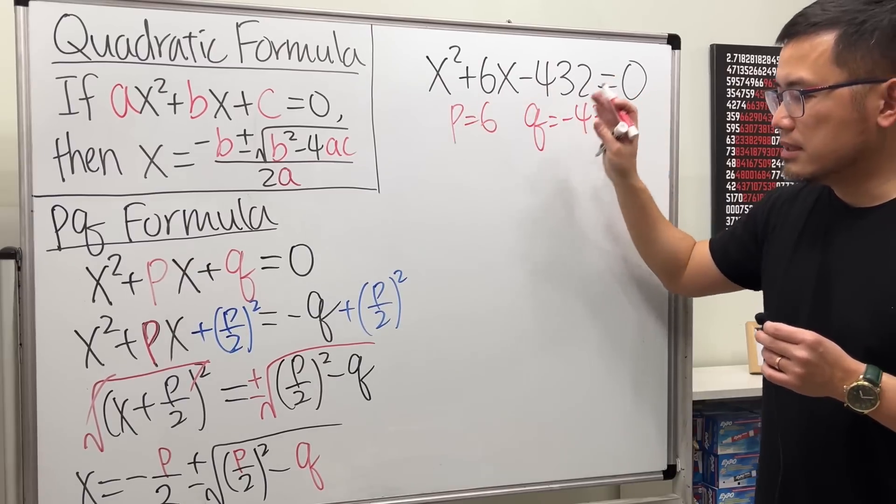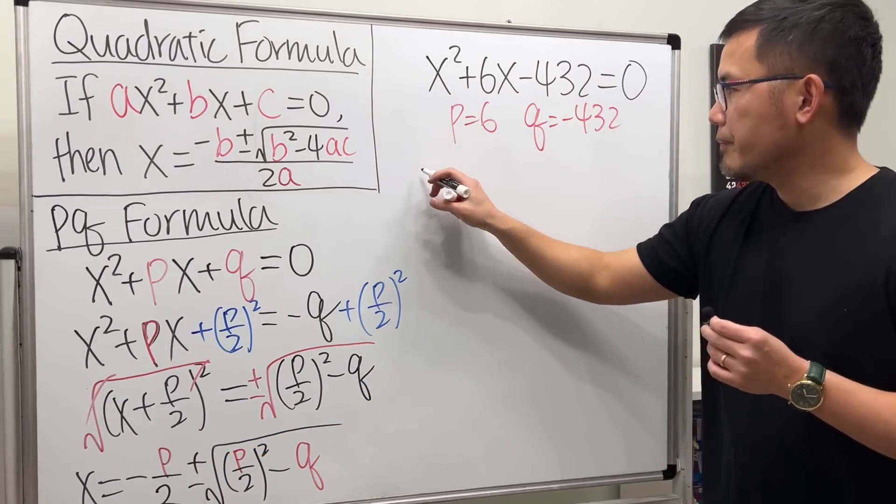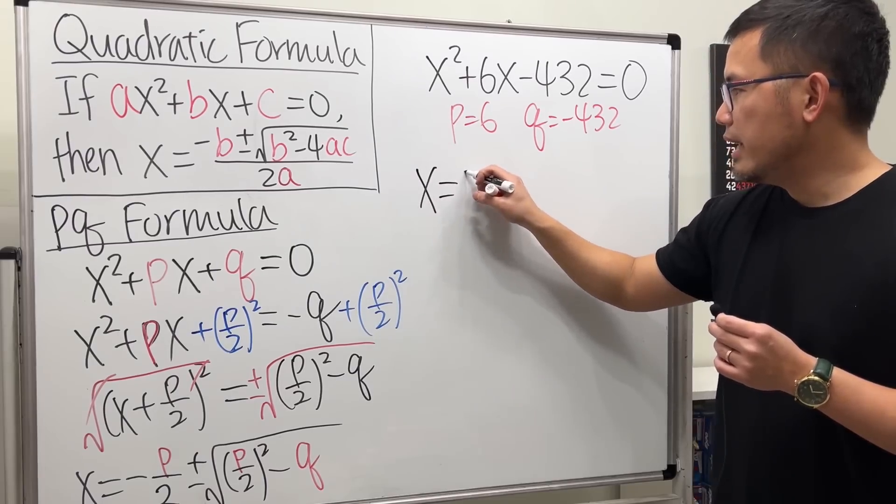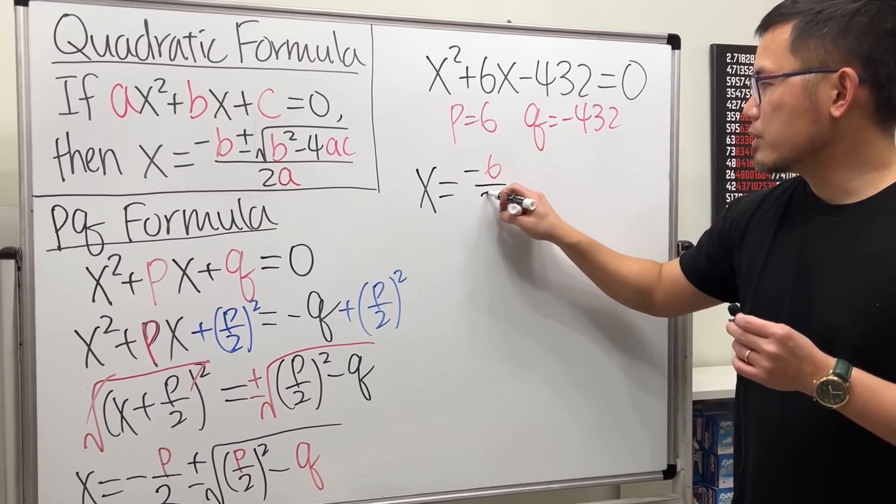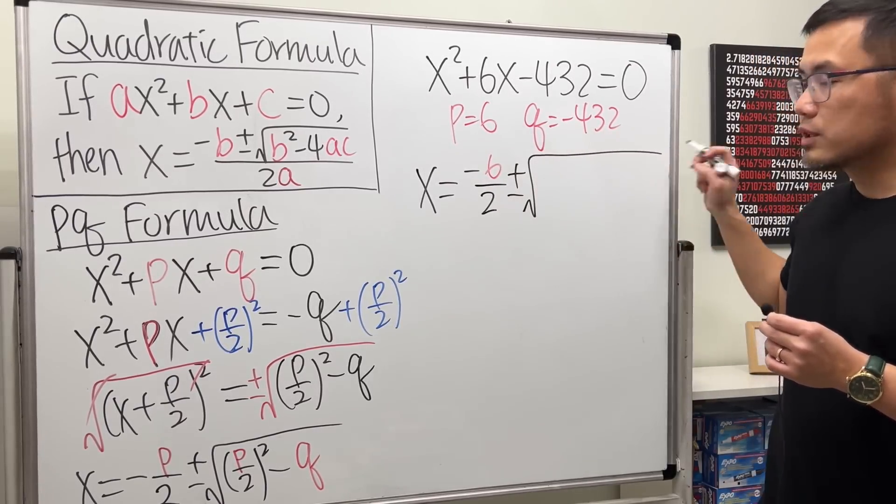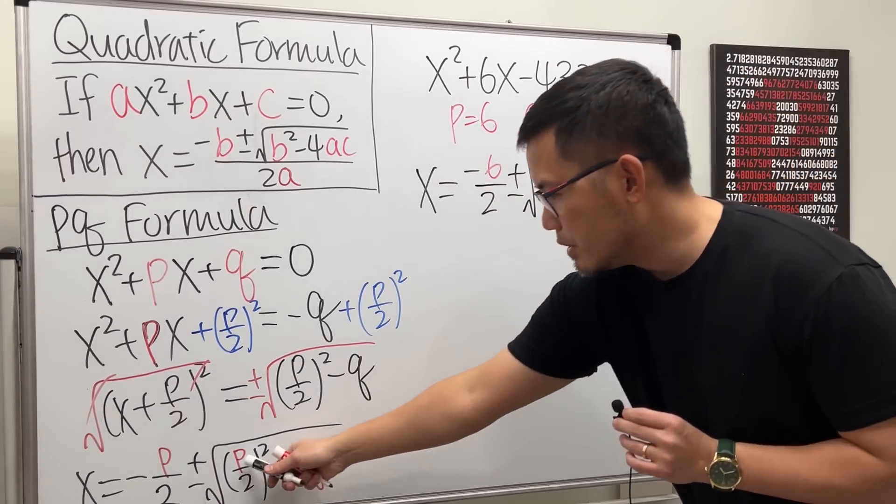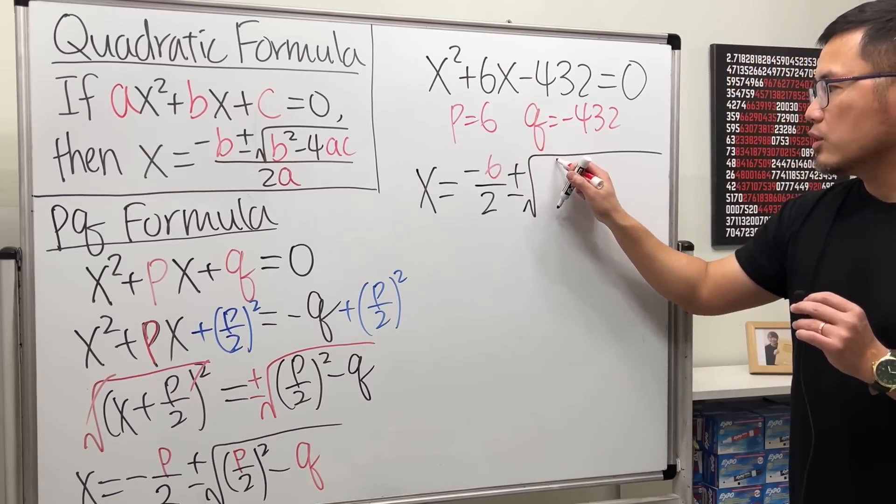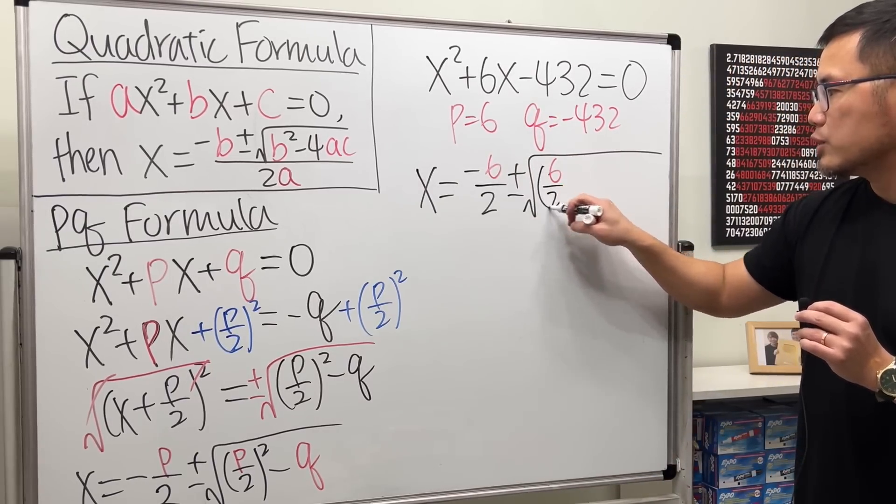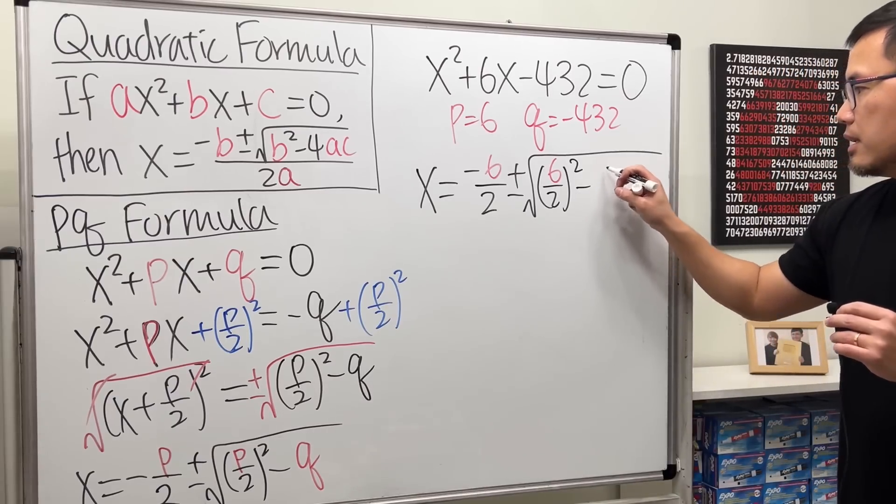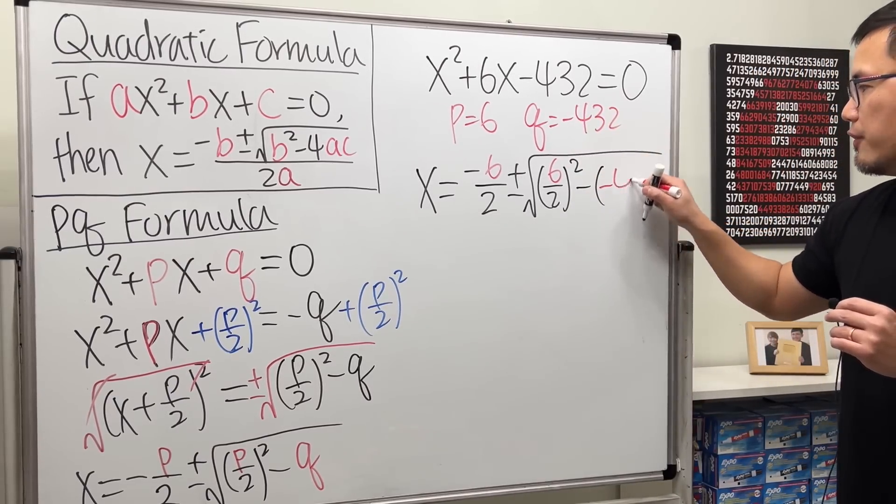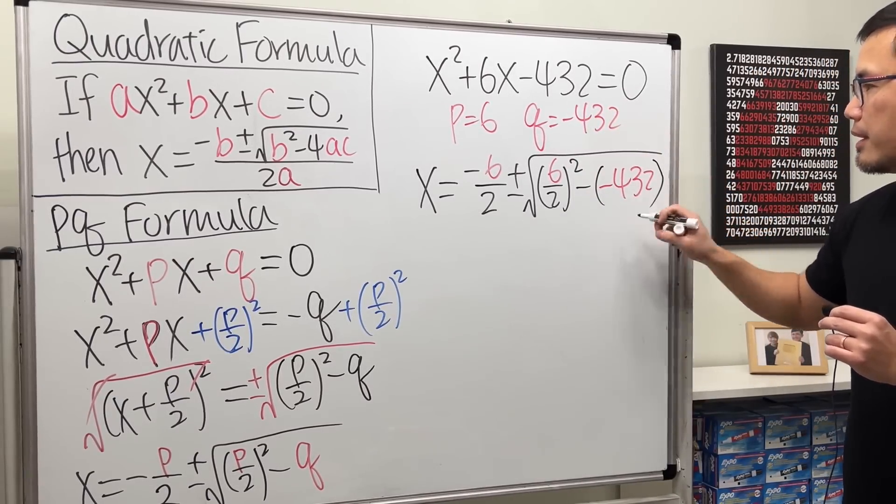Then, just plug in these numbers into the formula. x equals negative P, which is negative 6, over 2, plus or minus, open the square root, and then we have P over 2. That's 6 over 2. And then we square that minus the Q value is negative 432.